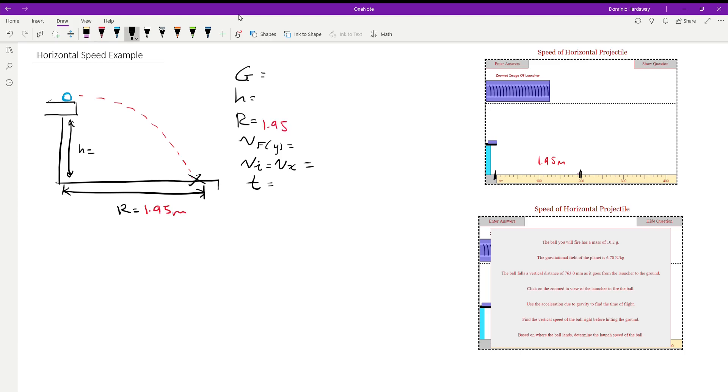For all our other variables we're going to go here into this list right here by clicking the show question button. The ball that is fired has a mass of 10.2 grams. The mass is redundant for this problem, so we're going to ignore that. The gravitational field is 6.70 newtons per kilogram, and if you've been watching the earlier example videos, we know that this converts exactly into 6.7 meters per second squared. It's a one-to-one conversion.